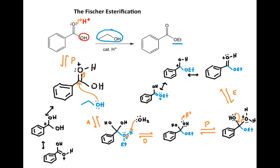We only have one step left in the mechanism. We simply need to deprotonate this protonated carbonyl. Again, I can choose a water molecule — when you have acid, you usually have acid and water. That water molecule will deprotonate that H. The O-hydrogen bond will break and become a lone pair on the O, getting rid of the positive charge to give us our final product, our ester.